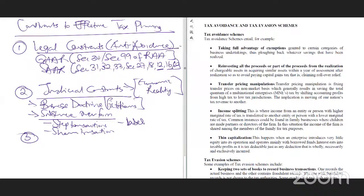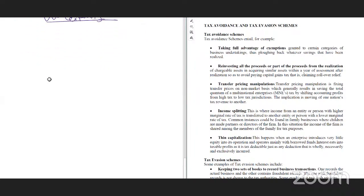The third constraint is uncertainty. People cannot plan taxes well because of uncertainty — we did not know that reliefs were going to change, or COVID came and shattered all plans. If a specific amendment is made, plans built around a previous rule could be spoiled. Uncertainty therefore stops people from properly planning their taxes.